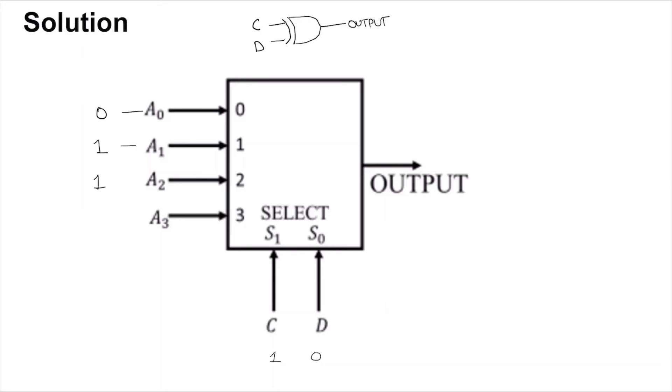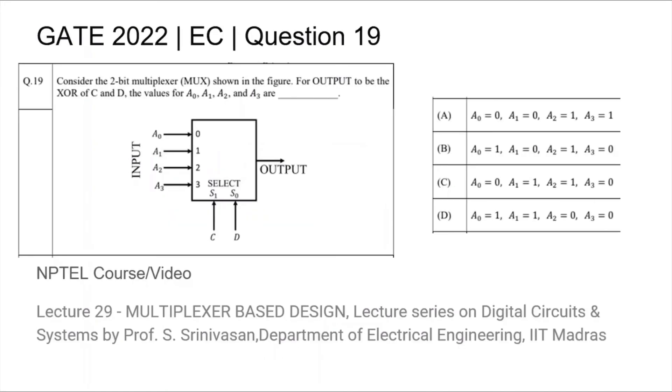And when C and D are 1 and 1, the XOR gate should output 0, so it outputs whatever A3 is tied to. So you tie A3 to 0. Thus the answer is C.